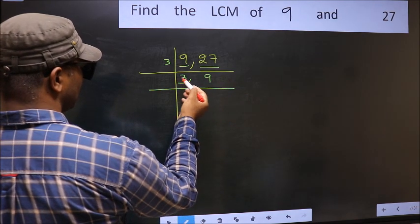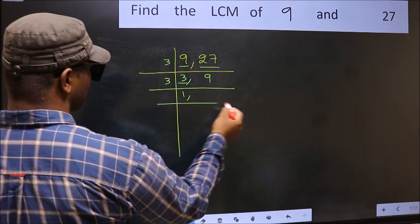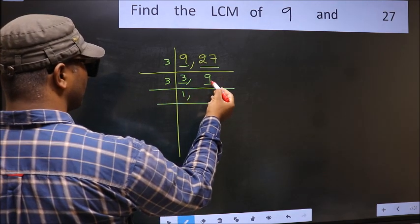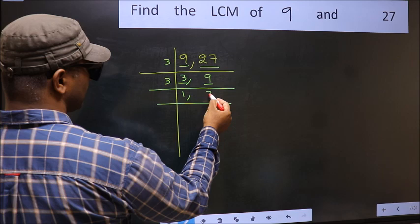Now here we have 3. 3 is the prime number, so 3 times 1 is 3. The other number 9, when do we get 9 in the 3 table? 3 times 3 is 9.